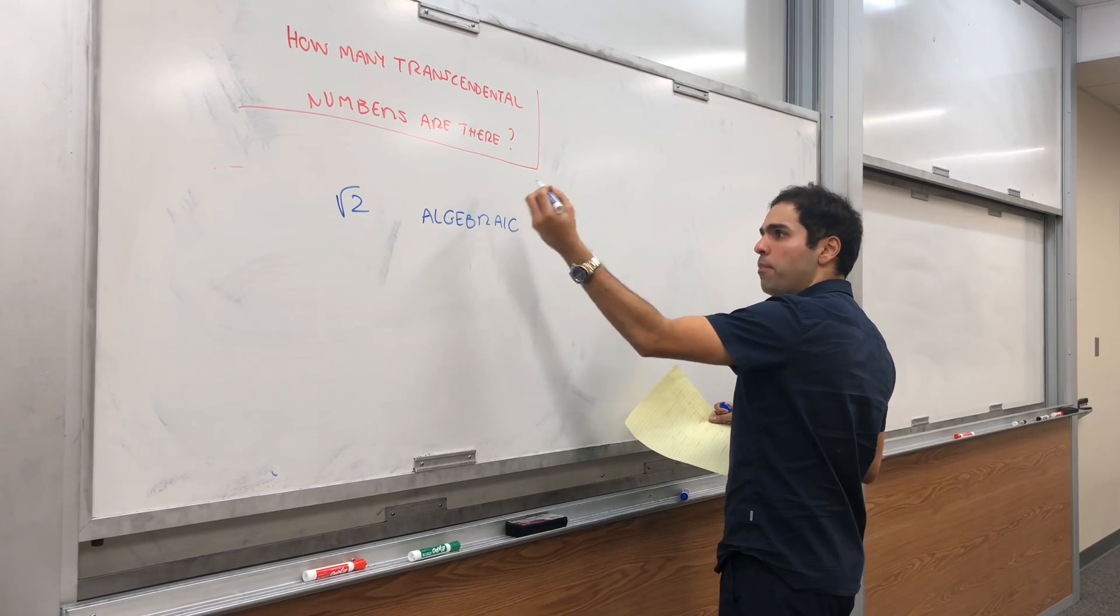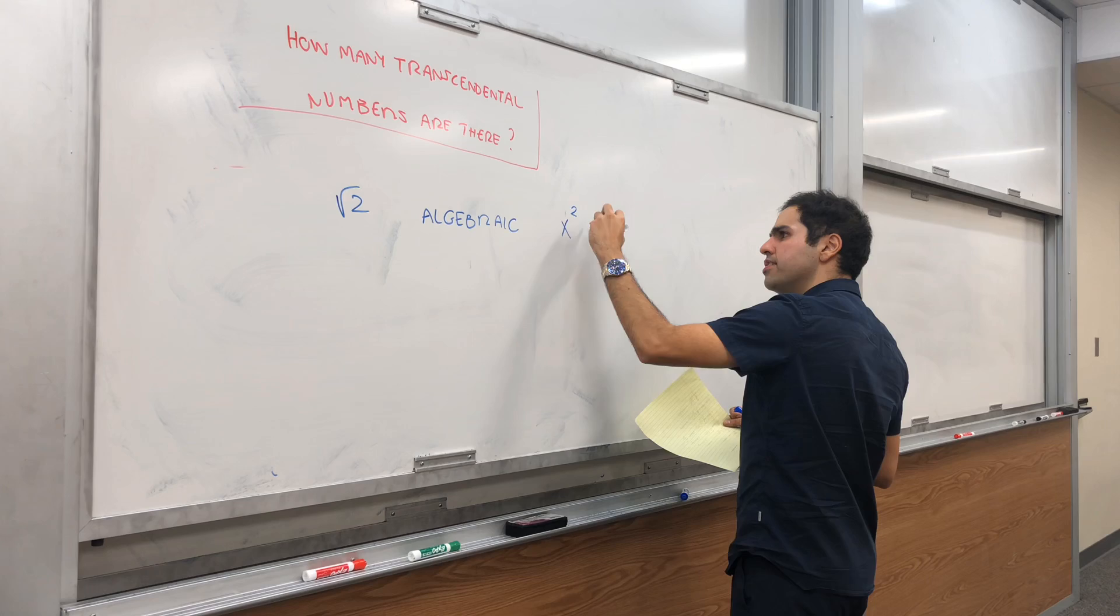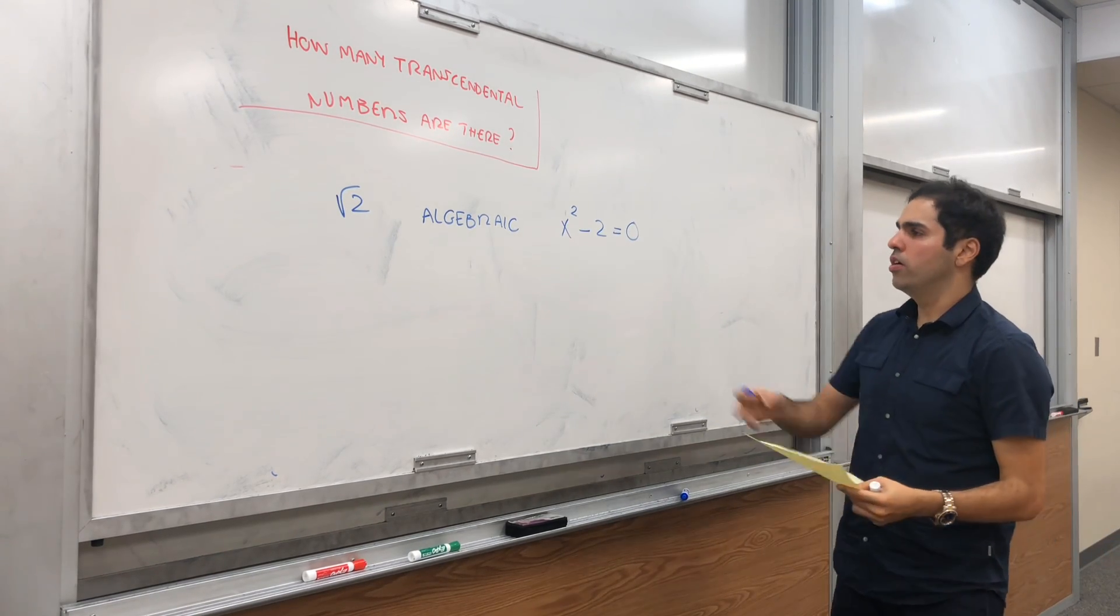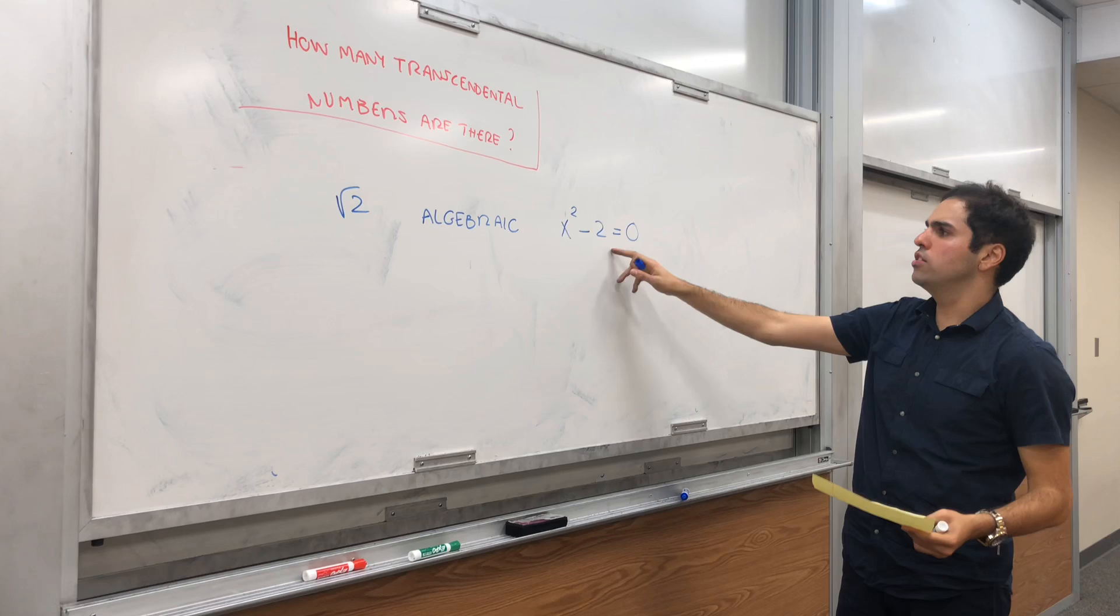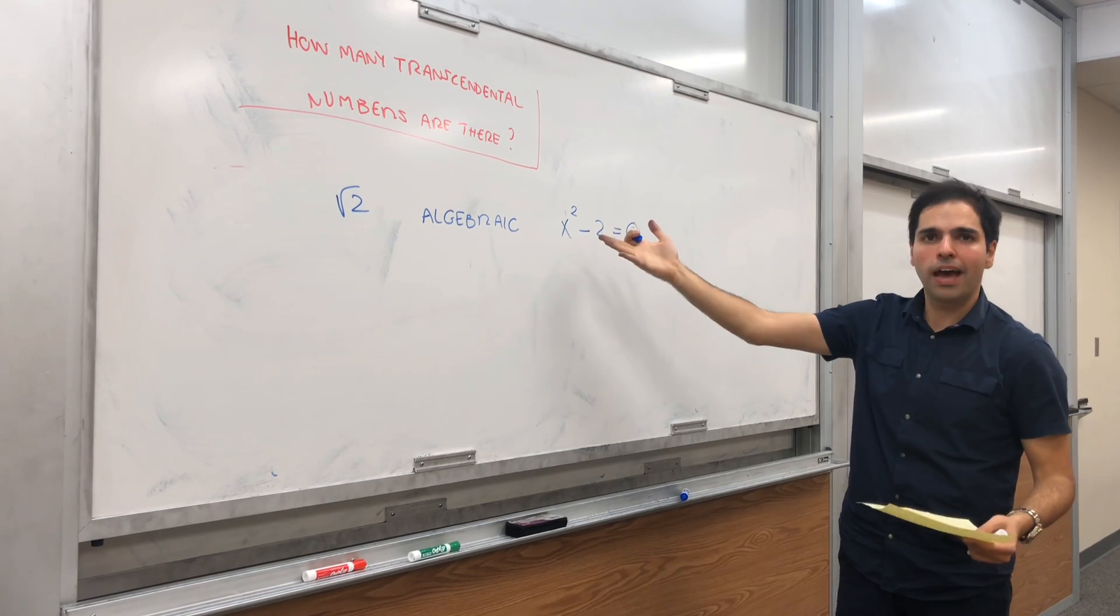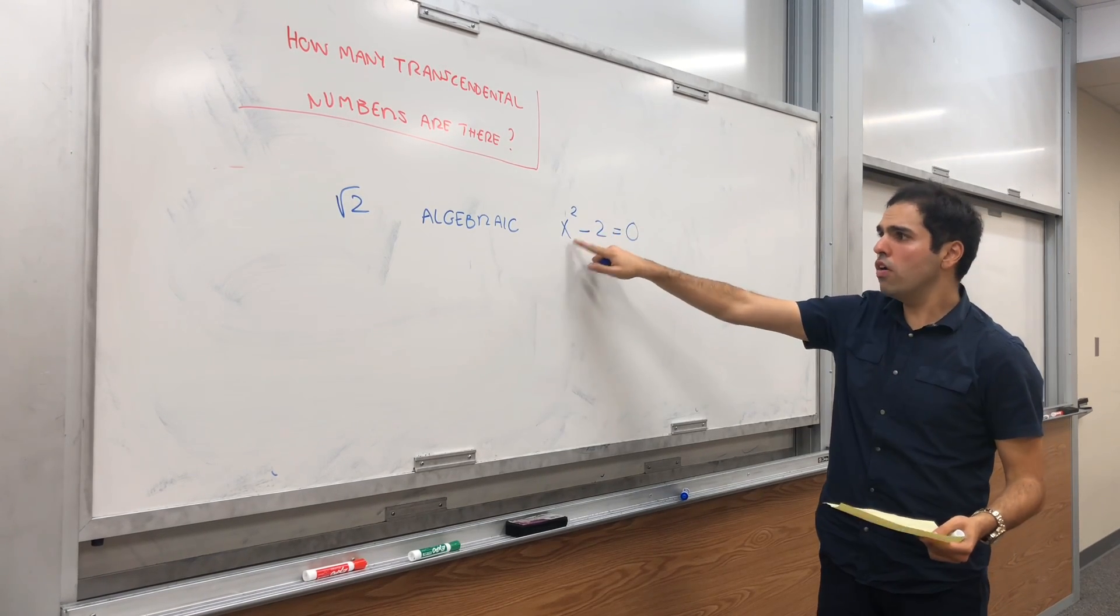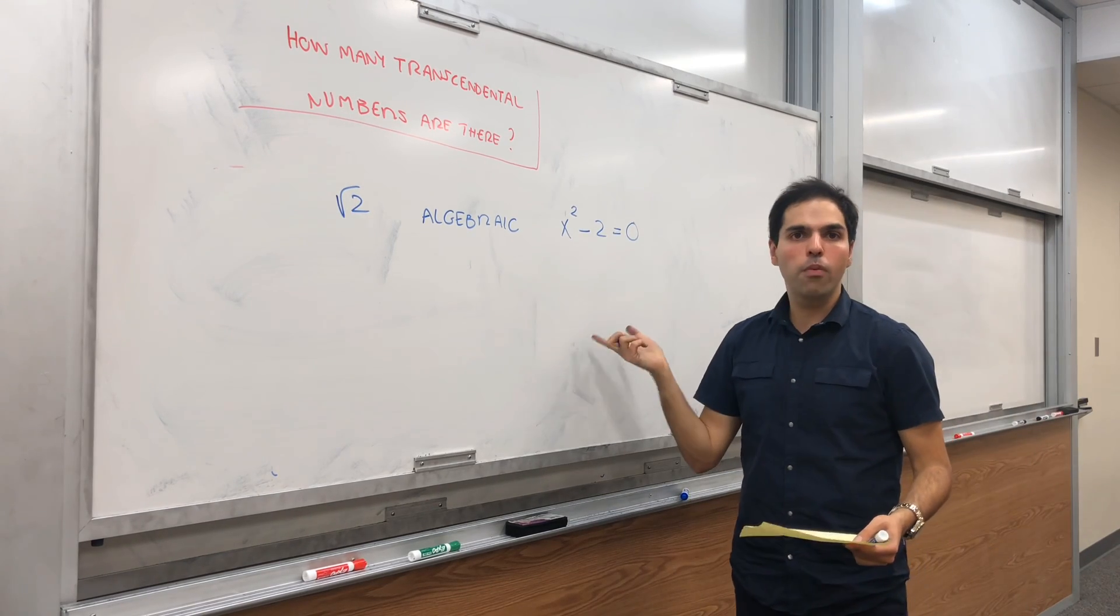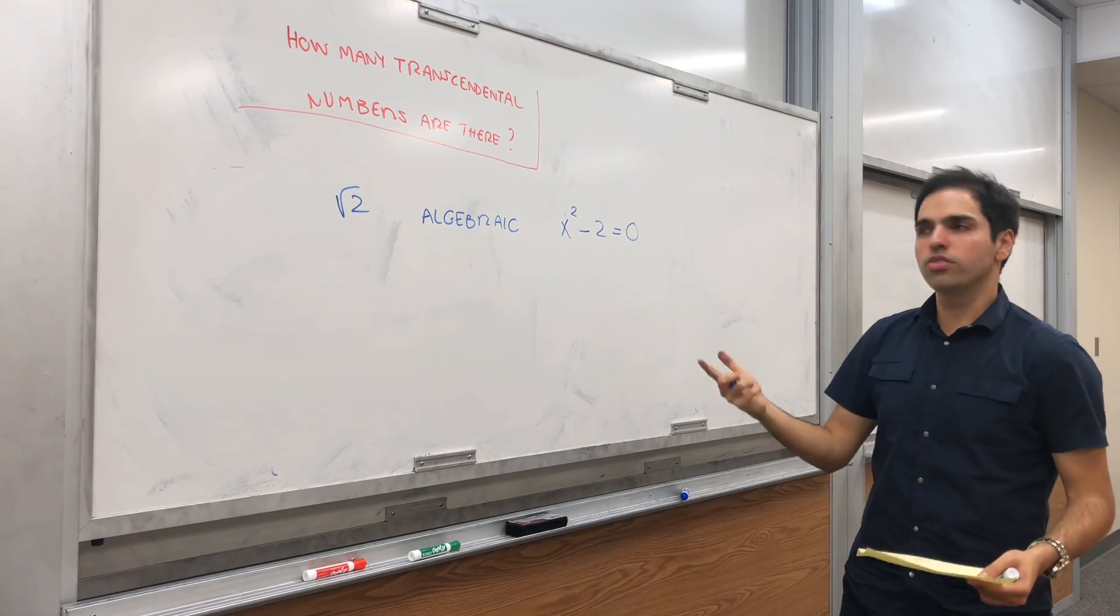Why? Because for example, square root of 2 is a zero of x squared minus 2 equals 0. So if you solve x squared minus 2 equals 0, then you get plus or minus square root of 2. So this is an algebraic number if it's a zero of a polynomial with rational coefficients.